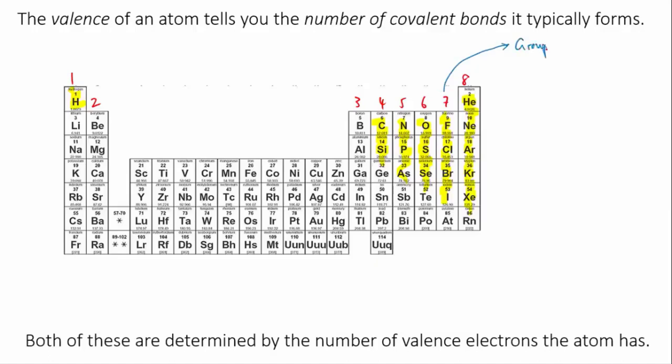Elements in group 7 have a valence of minus 1. That's because they have 7 valence electrons, which means they need to gain 1 electron to get a full outer shell. These elements typically form one covalent bond.